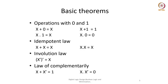The basic theorems or basic properties of Boolean algebra — there are four main ones. To understand them, I will quickly write the truth table of AND and OR.